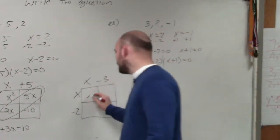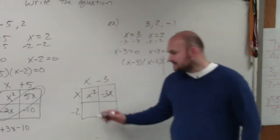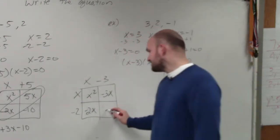x times x is x squared. x times negative 3 is negative 3x. x times negative 2 is a negative 2x. And negative 2 times negative 3 is a positive 6.